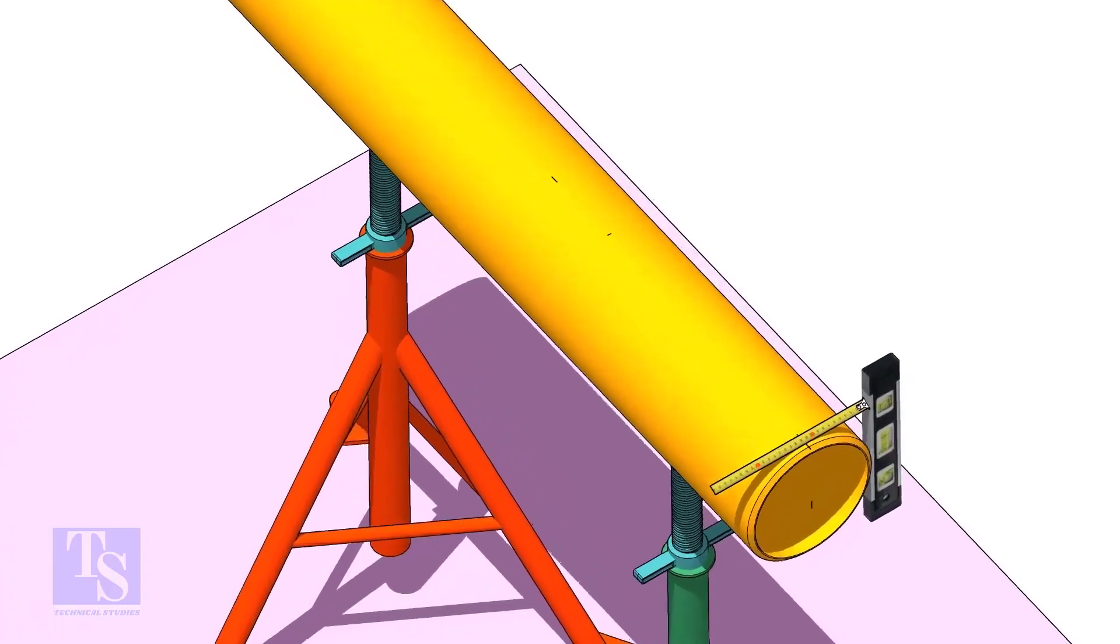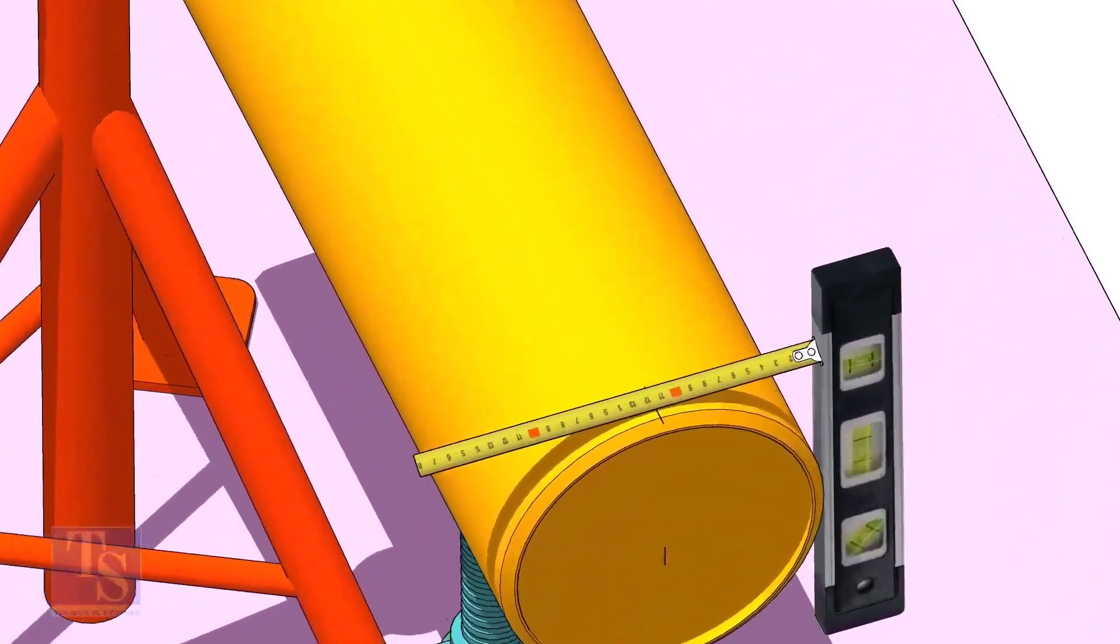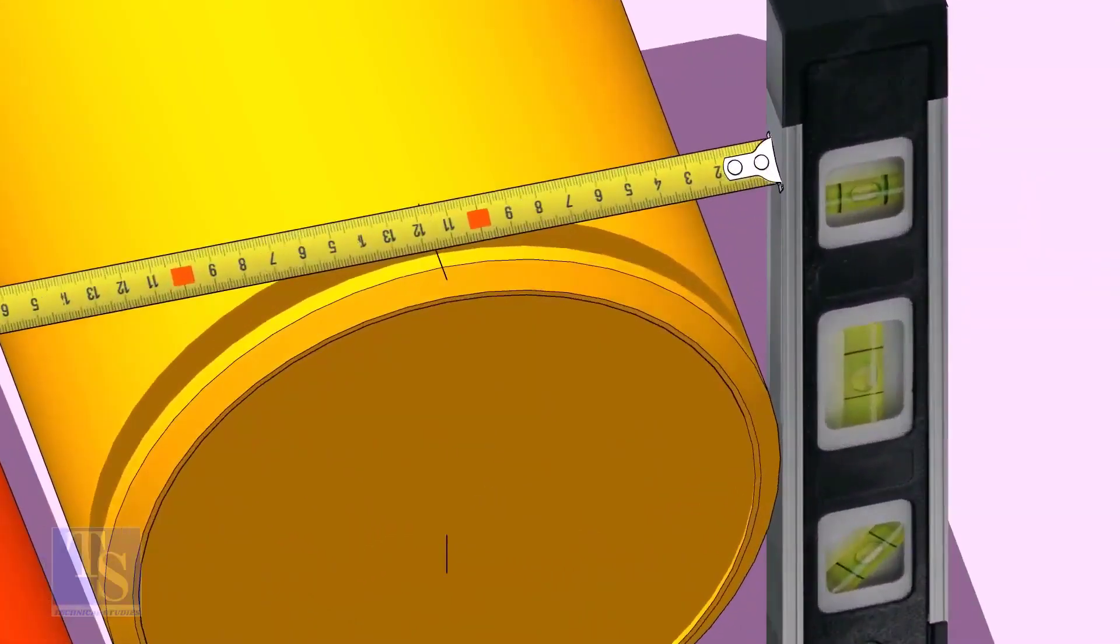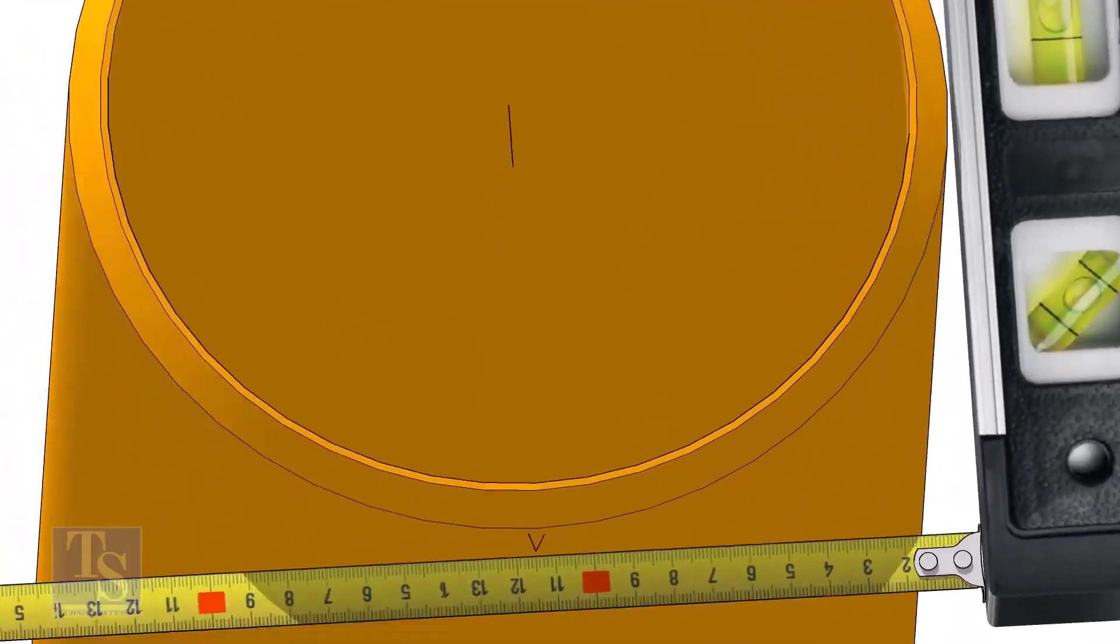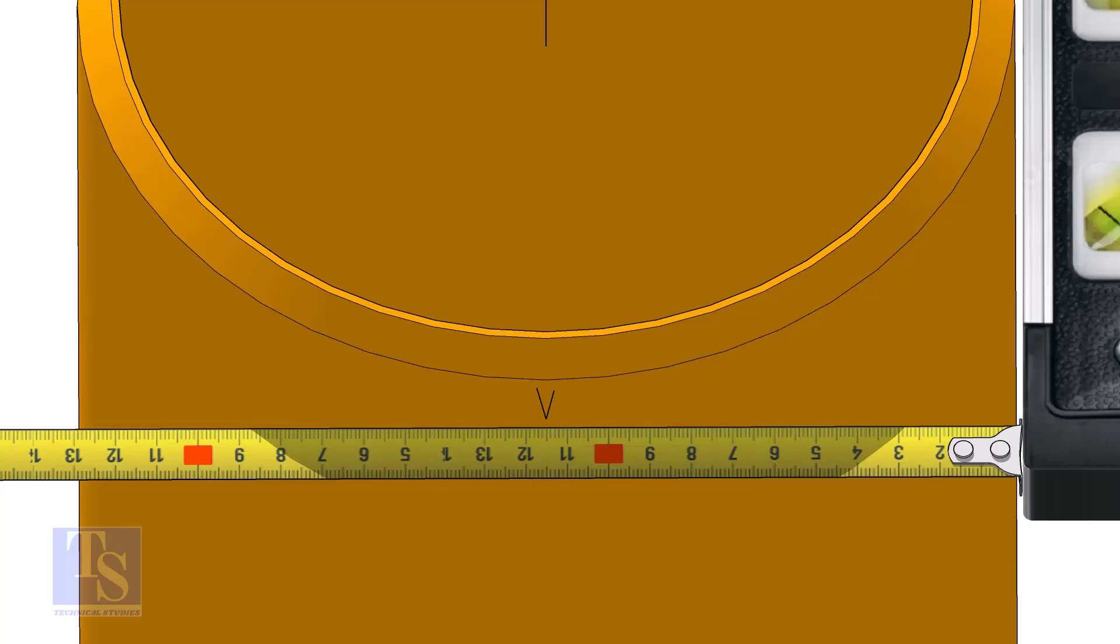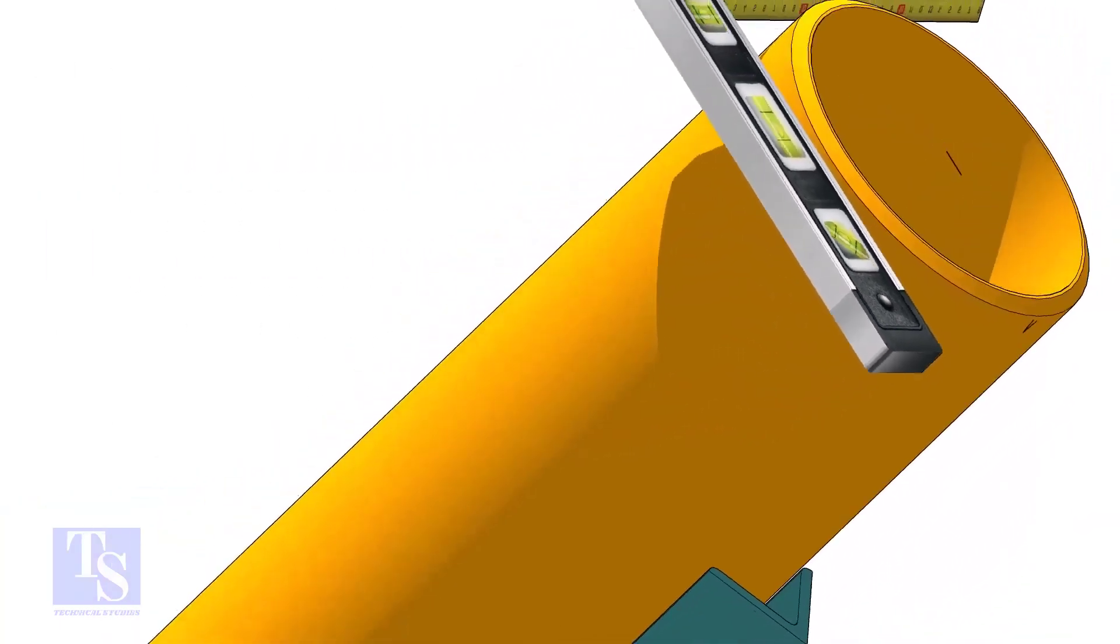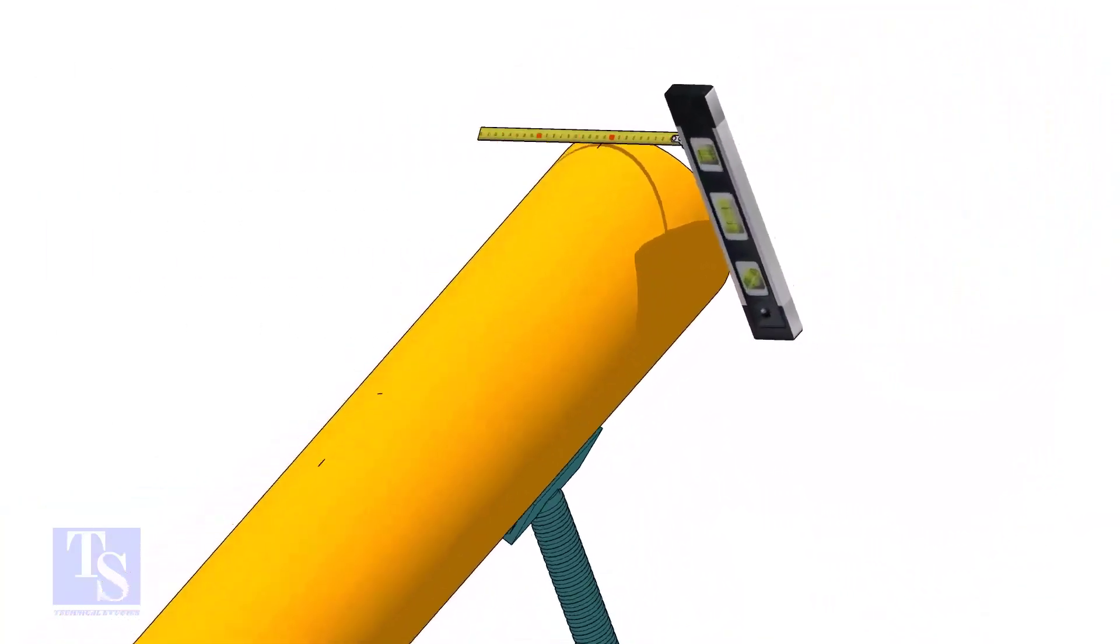Mark the center line of the header on the top and the bottom. Hold a level bottle firmly and vertical at the side of the pipe as shown. Mark half OD at the top and the bottom side of the pipe. Cross-check the dimension from the opposite side to ensure the marking is correct.